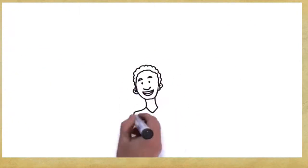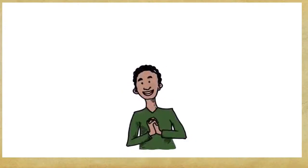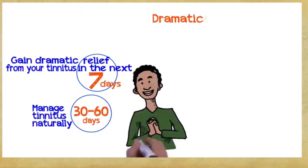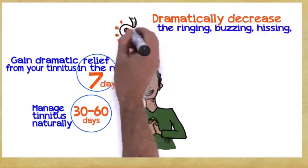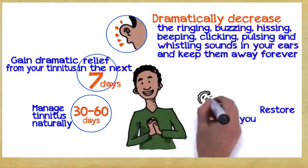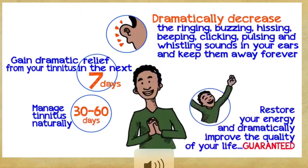So, what can you gain if you embrace these three easy principles? Well, you can manage tinnitus naturally within 30 to 60 days. Gain dramatic relief from your tinnitus within the next seven days. Dramatically decrease the ringing, buzzing, hissing, beeping, clicking, pulsing, and whistling sounds in your ears and keep them away forever. Restore your energy and dramatically improve the quality of your life, guaranteed.